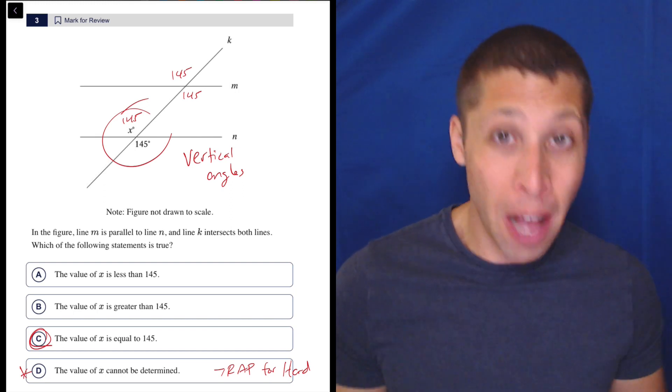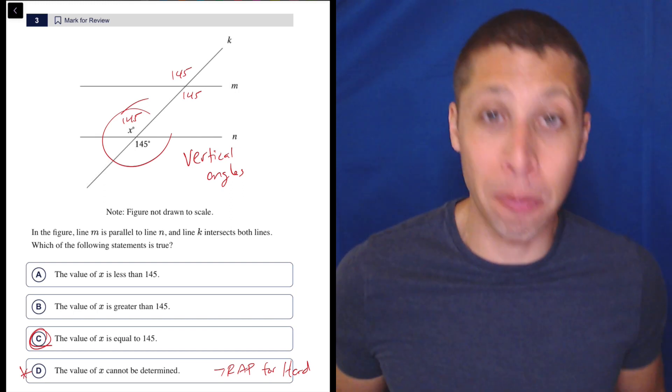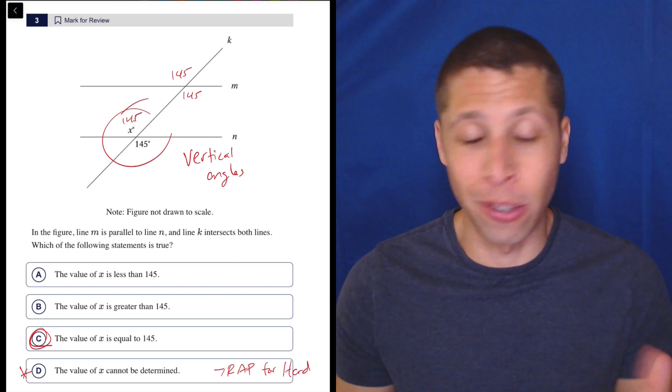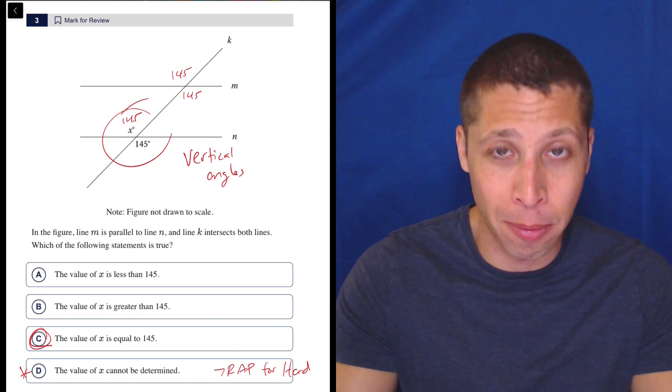and then you just give up, and you're like, well, if I can't figure it out, it must be impossible, and then you pick D because that's basically saying the same thing, that it's impossible.